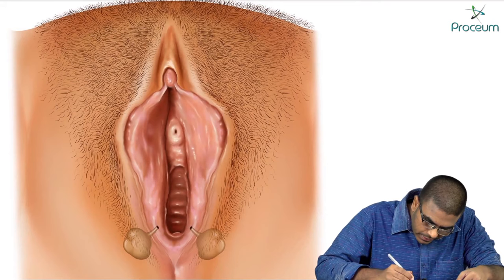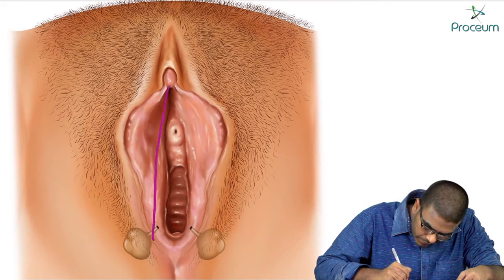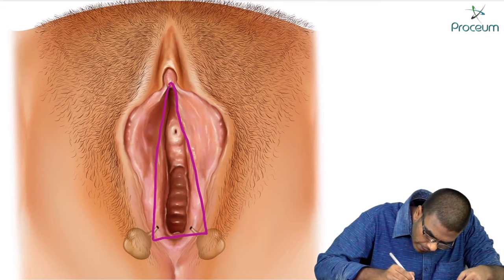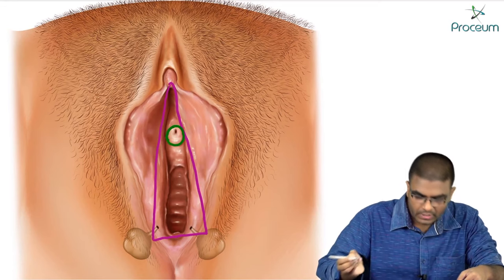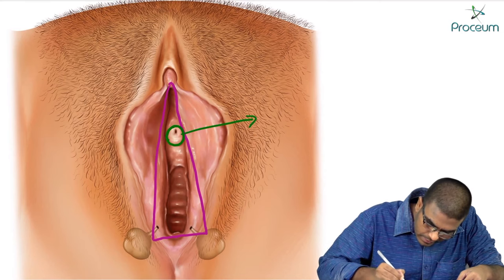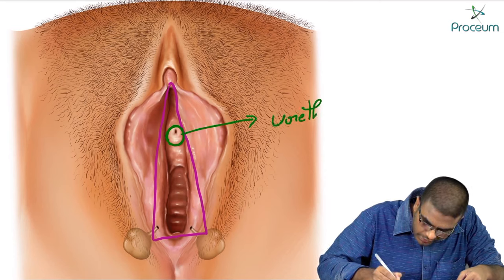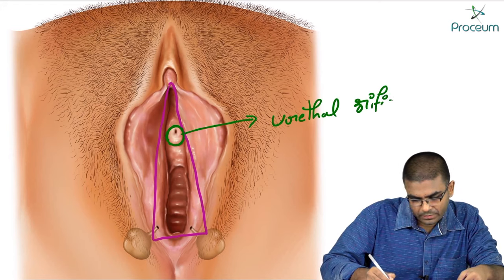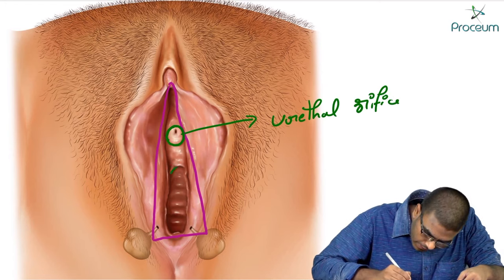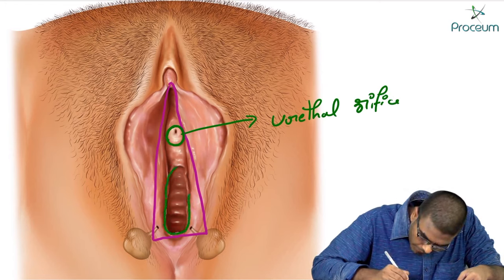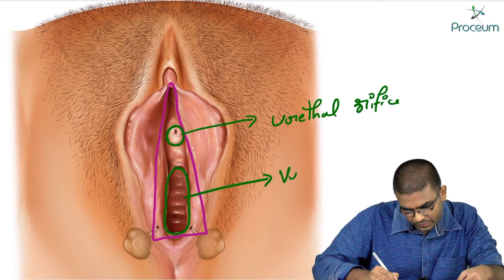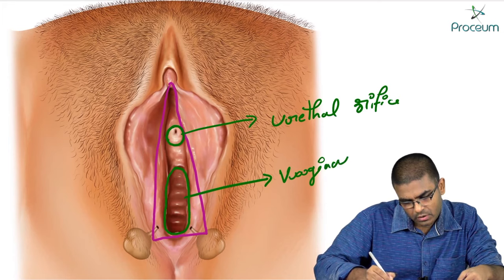Into the vestibule, we have an opening — this opening is the urethral orifice. Below that, there is one more opening which is the vaginal opening. The vaginal opening also opens into the vestibule of the vulva.